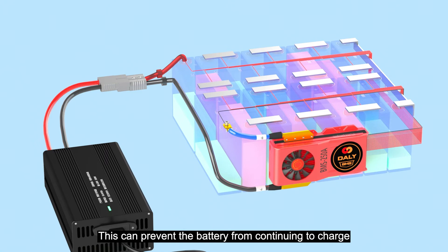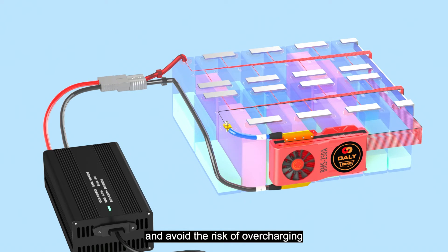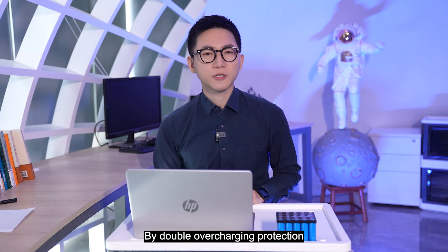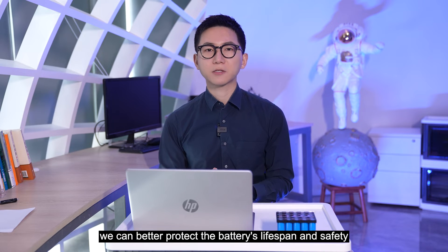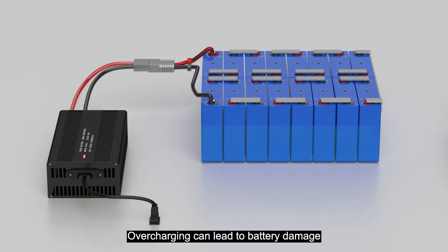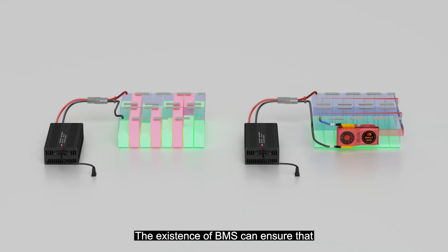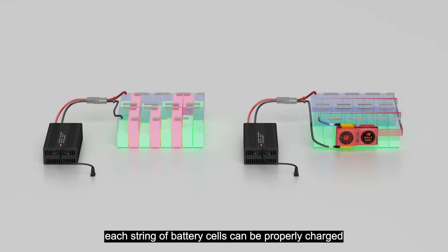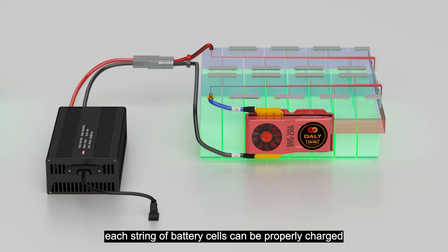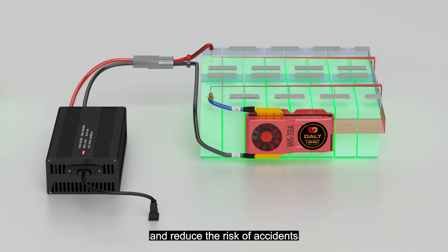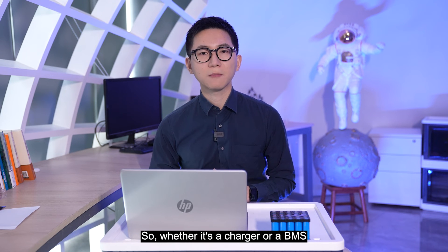By double overcharging protection, we can better protect the battery's lifespan and safety. Overcharging can lead to battery damage, reduced capacity, and even danger. The existence of BMS can ensure that each string of battery cells can be properly charged, extend the battery's service life, and reduce the risk of accidents.